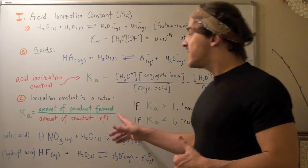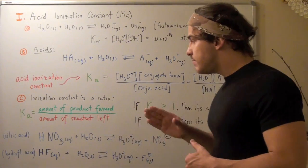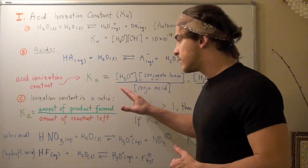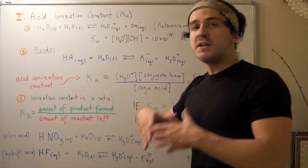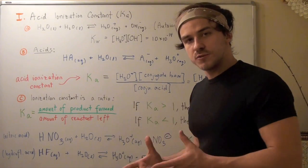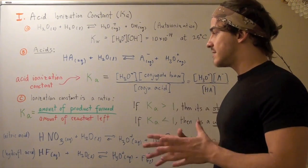Likewise, if our Ka is small, that means very little product is formed and a lot of reactant is left over. That means this acid is very bad at releasing that H, so it's a bad acid.